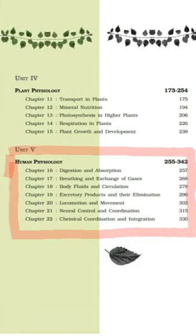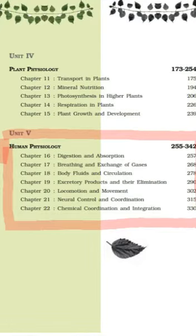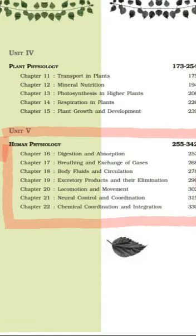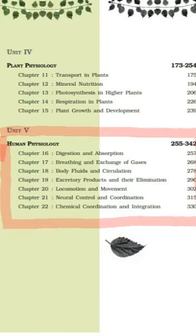Then unit 5th — Human Physiology. There, 7 chapters deal with different systems in the human body, like the digestive system, then respiratory, circulatory, excretory, then the muscular, then the neural and the endocrine. These are explained in detail in these chapters.